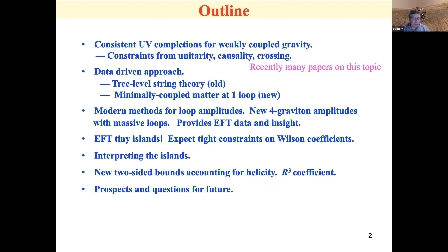Immediately you think, that's very strange because string theory and whatever intermediate model we had are completely different — how did they land on very tiny islands? So immediately you expect there should be tight constraints on the Wilson coefficients, on the EFT coefficients. You can use that to guide further research. I'll talk about interpreting the islands, then finish with two-sided bounds accounting for helicity, bounds on R-cubed coefficients, and questions for the future.